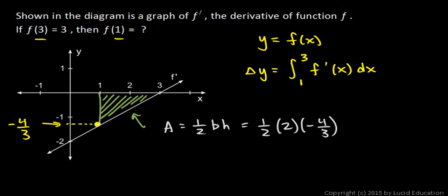And that was pretty easy. And calculating this, the 2's just cancel out, and we're left with negative 4 thirds for that area.